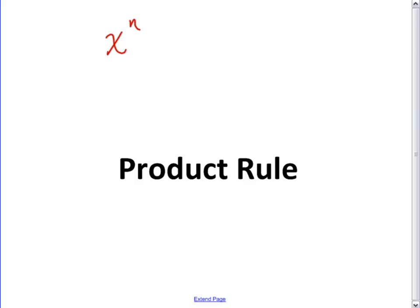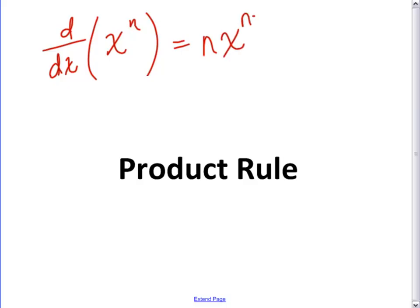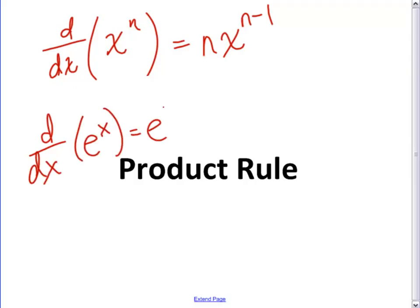We're going to talk about more shortcuts. We talked about shortcuts last time for things like how do you take the derivative of x to the n, and if you remembered it, it made your life a lot easier. It was nx to the n minus 1, and we did the derivative of e to the x, but we only had some very simple basic functions that we know how to take the derivative of.